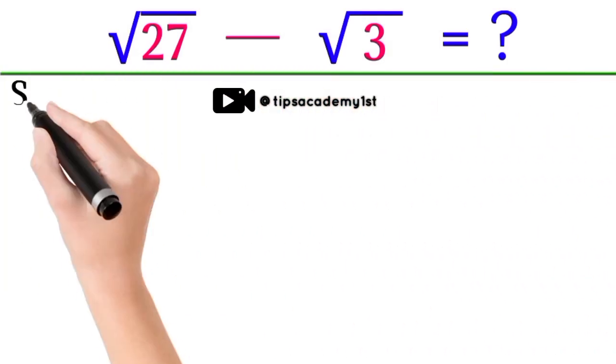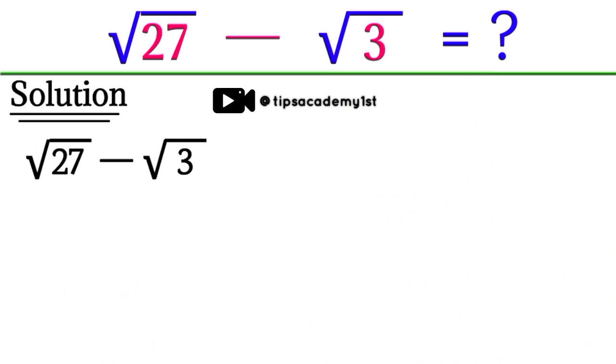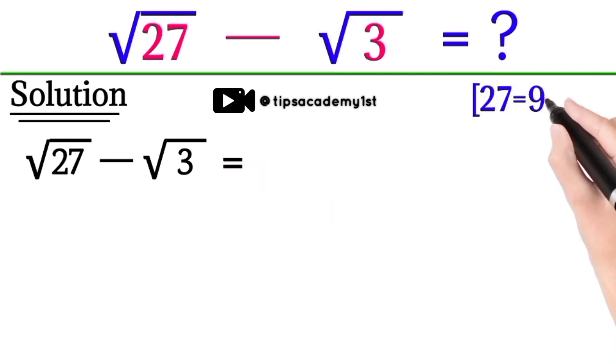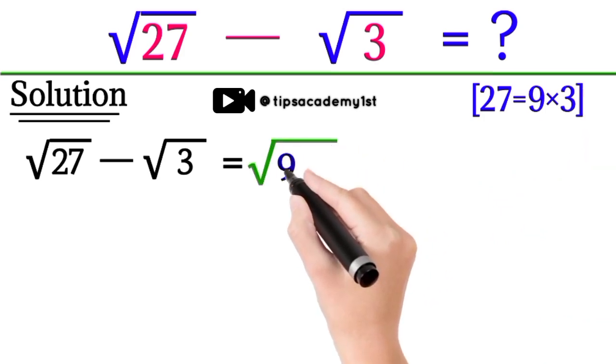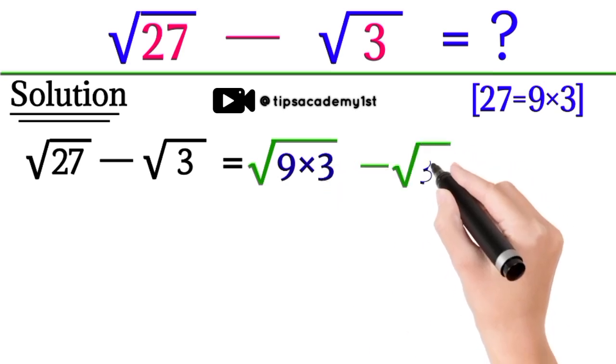Let's start to solve this problem. In this problem, first of all we will factorize 27. 27 can be written as 9 times 3, so we will replace 27 by 9 times 3, and square root of 3 will be the same.